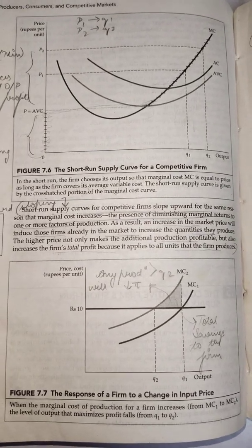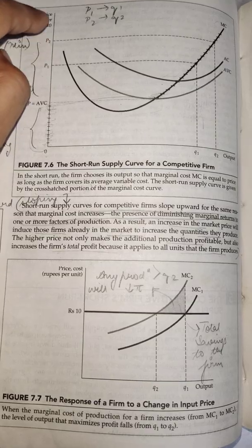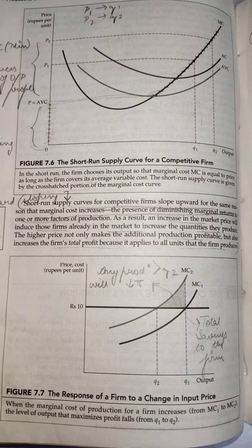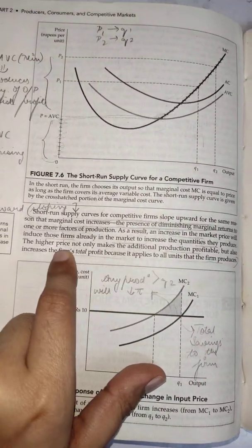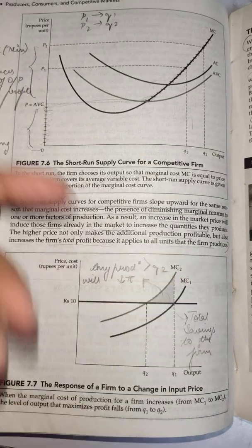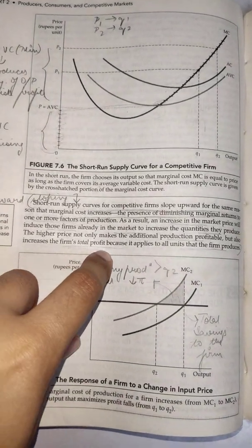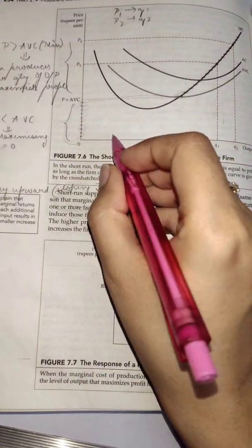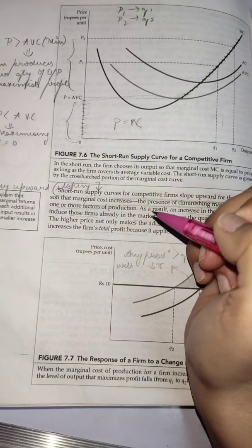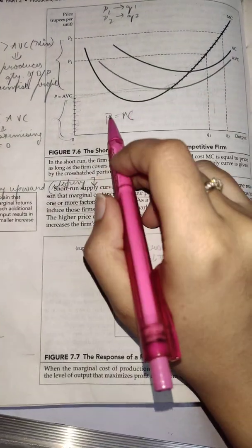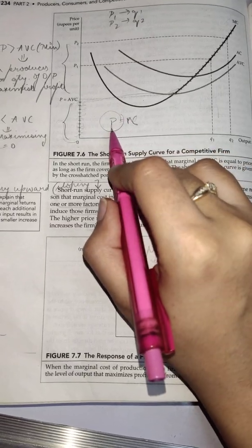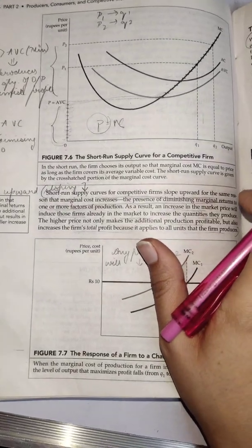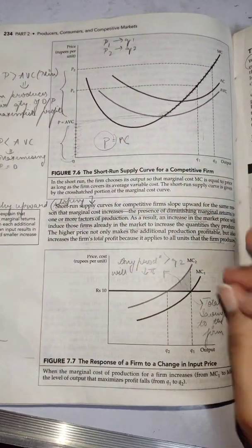An increase in market price will induce firms already in the market to increase the quantities they produce — the supply curve is upward sloping. The higher price not only makes additional production profitable but also increases the firm's total profit. In a perfectly competitive market, price equals marginal cost and that price applies to all quantities sold — there is no price discrimination.